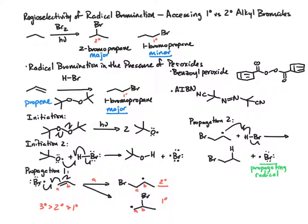What we want to be clear on is whether you're employing molecular bromine in light, you're going to get the most substituted alkyl bromide as the product, or if you're using HBr and a peroxide, you're getting the least substituted alkyl bromide as the product. That is an example of regioselectivity in radical bromination.